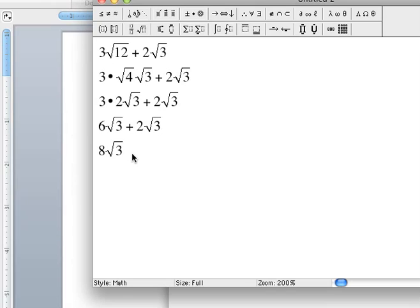Now I have 8 square roots of 3. Now I've successfully added 2 square roots that weren't the same in the beginning. But I was able to change them so that the square roots were the same, so I could add in the end.